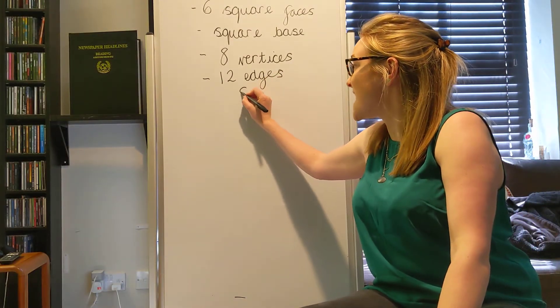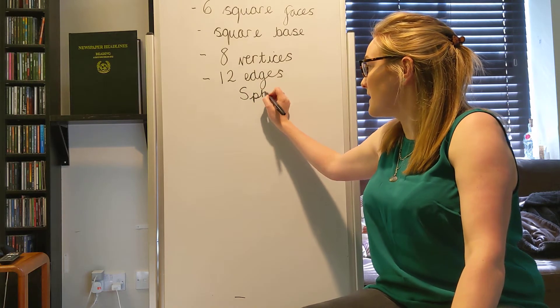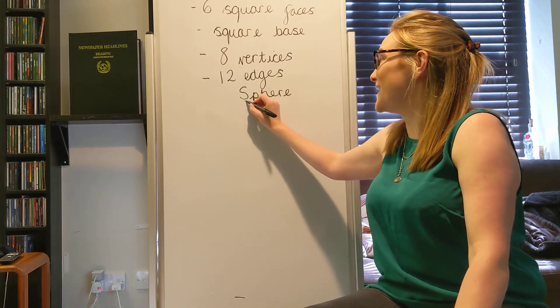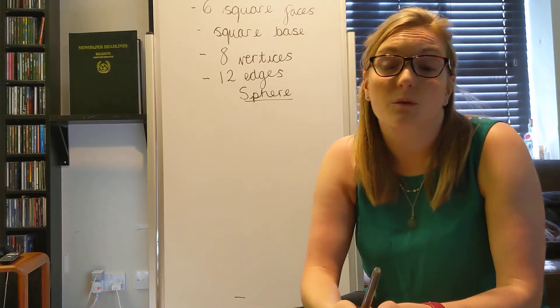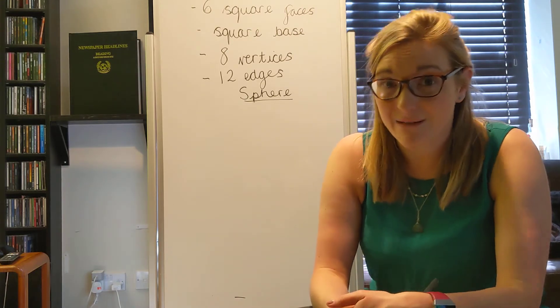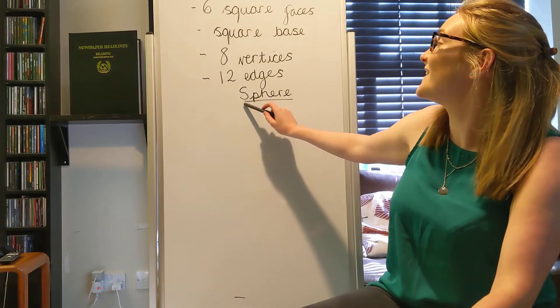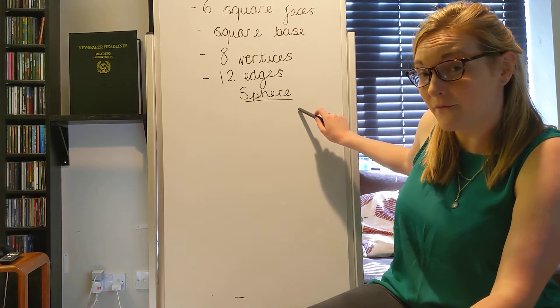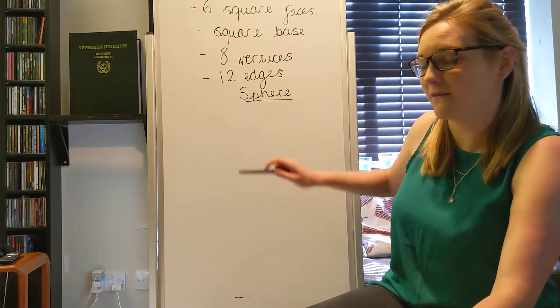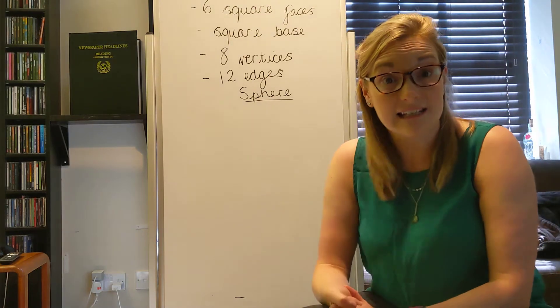Okay, so the next shape we're going to look at is something called a sphere. As I said in my video yesterday, sometimes we call it a Sophia, but that's a lovely little girl's name. And actually, this is sphere. Sphere. Can you say that? Sphere. Fantastic. Well done. So let's have a look at a sphere.